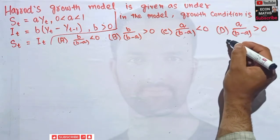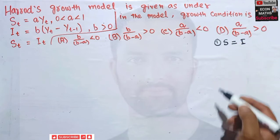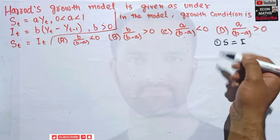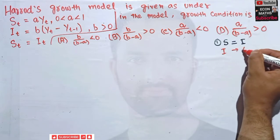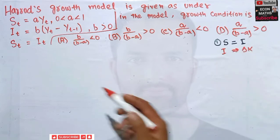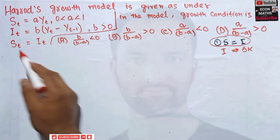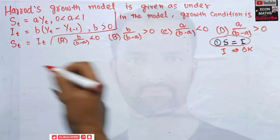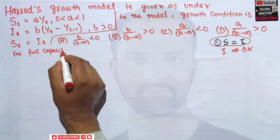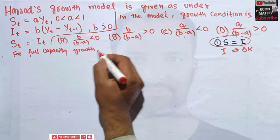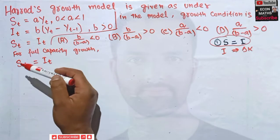The first assumption of the Harrod-Domar model is that whatever is saved is invested. The second assumption is that investment leads to capital formation. So for the Harrod-Domar growth model, the condition for full capacity growth must be that savings equal investment — that is, S_t = I_t.